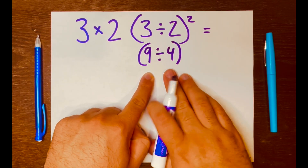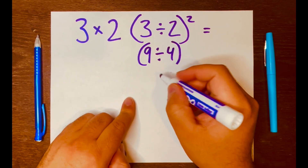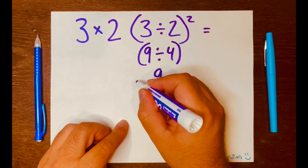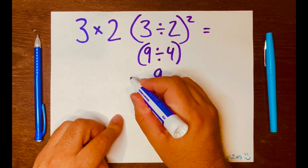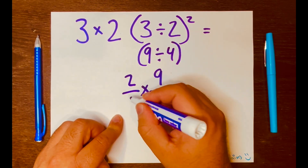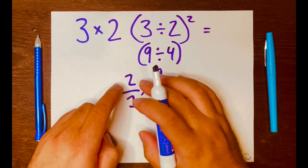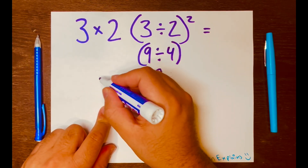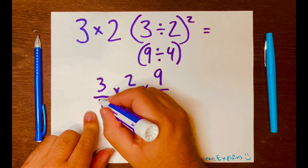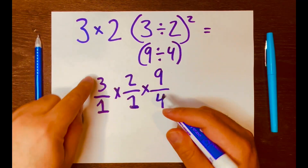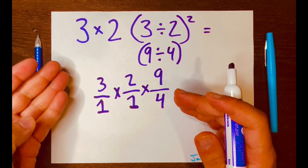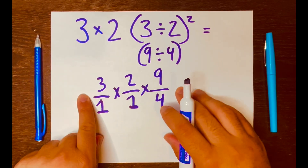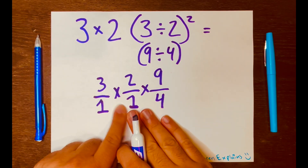Now, nine divided by four — I want to turn this into a fraction to make the math easy: nine over four. Then bring down the two, but turn the two into a fraction as well. Two over one equals two — it doesn't change the value. Do the same for the three: three over one equals three.